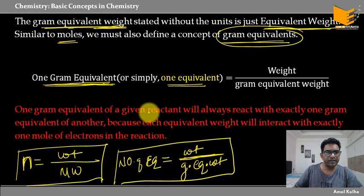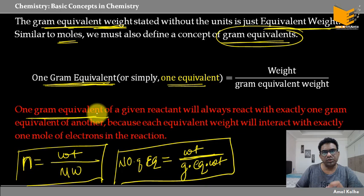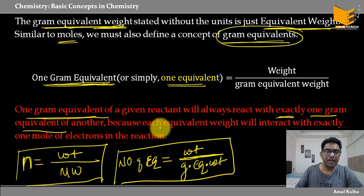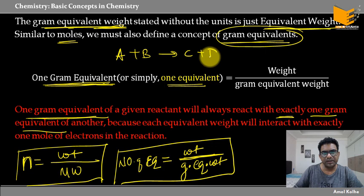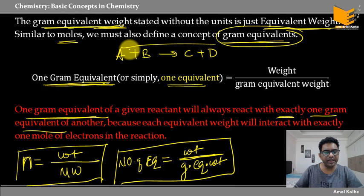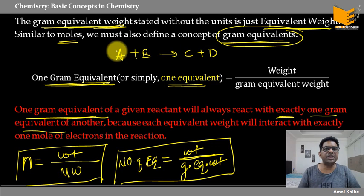अगर मान लो A + B gives C + D — तो in general, mole concept के लिए इस reaction को balance करना पड़ती है। लेकिन in equivalent concept, यह ज़रूरी नहीं है। क्योंकि यहाँ पे हम एक underlying principle use करते हैं which is conservation of electrons — किसी भी chemical reaction में जो electrons हैं वो conserved होते हैं, जितने electrons दिये उतने electrons लिये।